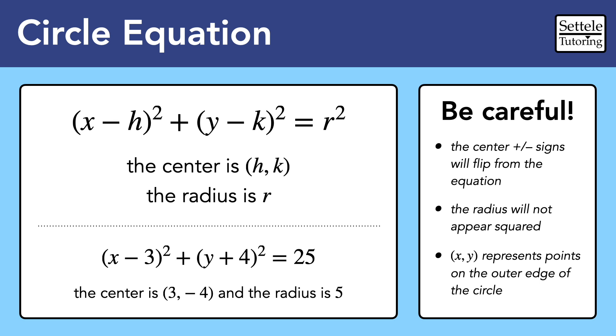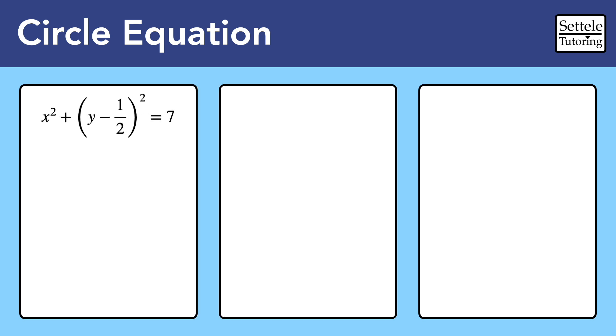Let's look at a few twists that the SAT might throw at us. First we might get an equation with weird numbers, but we can't let that scare us. The formula still works. In this case, the lone x tells us that the x-coordinate of the center is 0, and it doesn't matter that the y-coordinate is a fraction. We still flip the sign as usual.